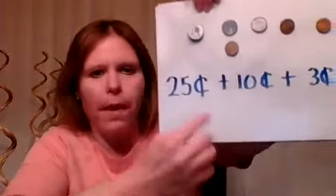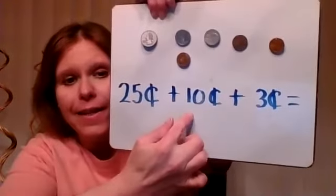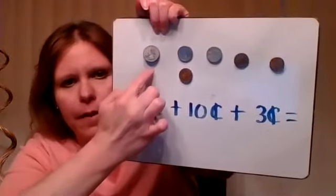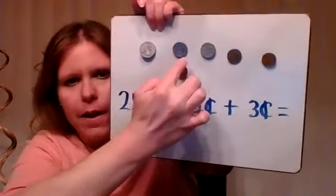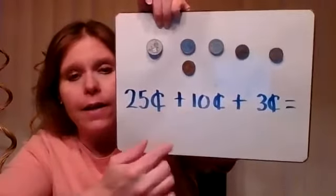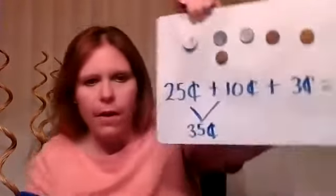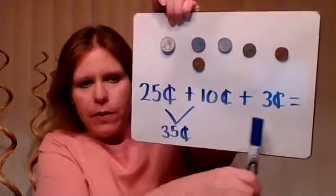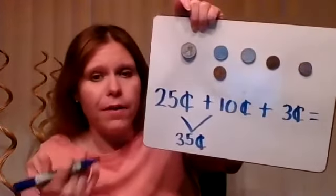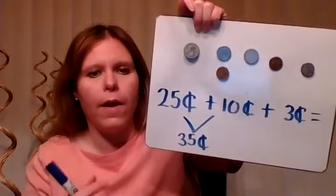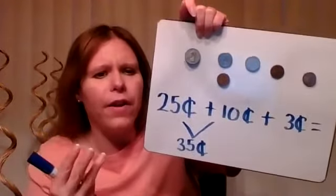So we need to add up 25 cents plus 10 cents plus three cents. If I have 25 cents plus my two nickels, that's 25 plus 10. Ten more than 25 is 35. So 25 cents and 10 cents together makes 35 cents. Then all I have to do is add on three more — counting on from 35: 36, 37, 38. Our answer is 38 cents.